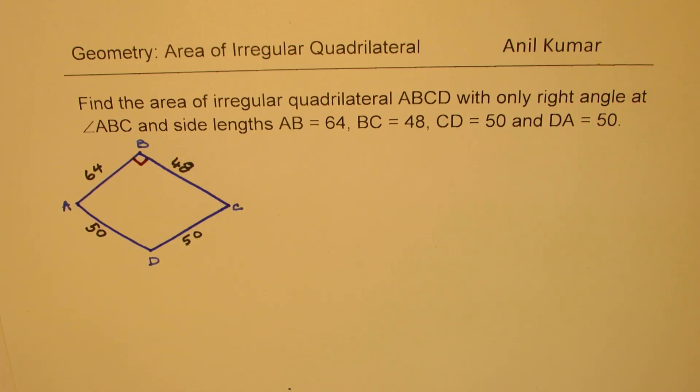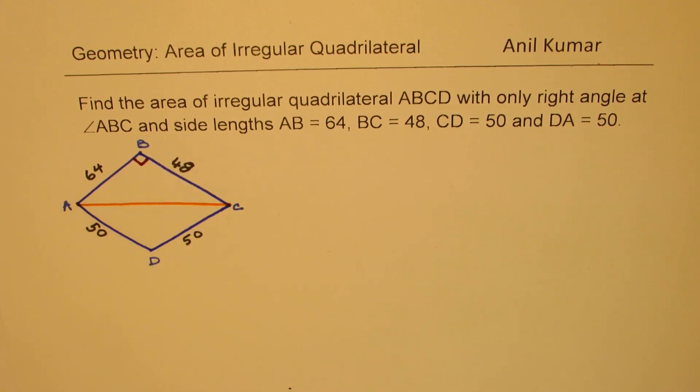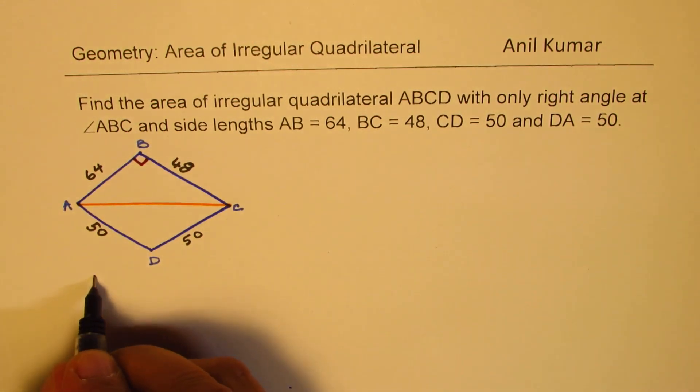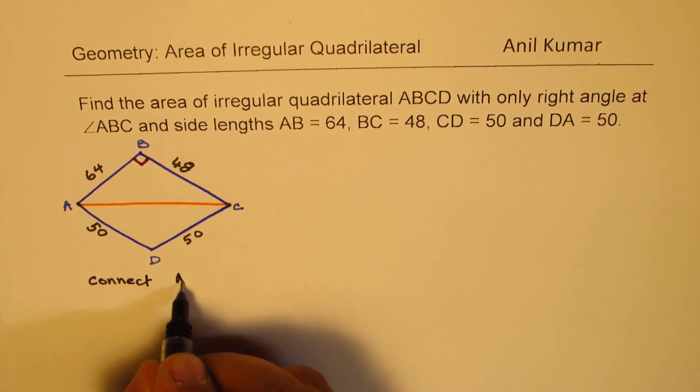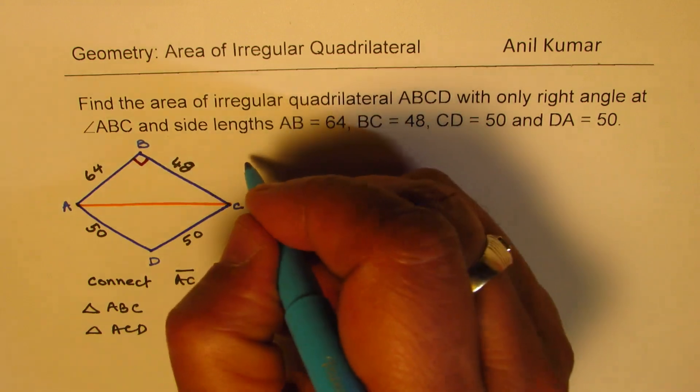Well, to find that, we'll do a little bit of construction. Since we have a right angle here, we can easily find the length A to C using Pythagorean theorem. That's kind of important. So once we have that, then we have two triangles with known sides. So first step is connect A, C. So now we have two triangles. We will have a triangle ABC and we have a triangle ACD. We can add these two areas and then find the solution. So that is how we are going to do it.